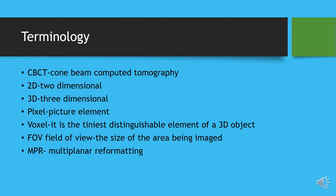To start with, cone beam computed tomography is commonly referred to as CBCT in dentistry. So you will come across the terminology CBCT more commonly rather than cone beam computed tomography. 2D refers to two-dimensional, 3D refers to three-dimensional — I'm sure you are all already aware of that.